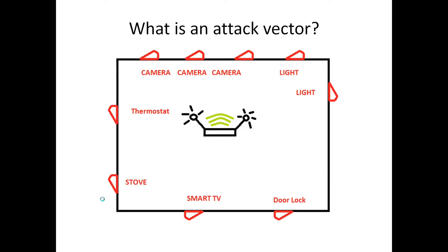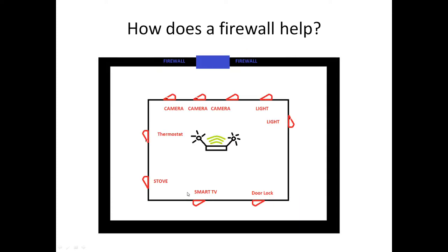Think about attack vectors. Simulating your house with your router in the middle — connected lights, cameras, thermostats, a stove, smart TV, door lock — each of these is a potential vector. If one is compromised, attackers can jump around inside your network and impact other items. Think of it like a house made entirely of doors: you only need one broken door to get inside and access everything. As we add more IoT devices, we're adding more doors — more ways into your network.